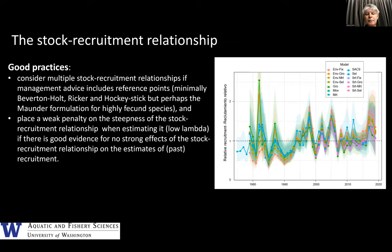For best practices on the stock-recruit relationship itself: given that there is often very little contrast in stock and recruitment for tuna species, it's important that sensitivity be explored to different types of stock-recruit relationships — and the hockey stick is one I don't see used as much as perhaps it should be. Second, it's always good to attempt to estimate steepness when you can — I'm a great fan of doing that, particularly with a prior on steepness, because that allows uncertainty to be propagated into the estimates and hence the management reference points. Simply fixing steepness really underestimates the extent of true uncertainty, at least for the reference points.